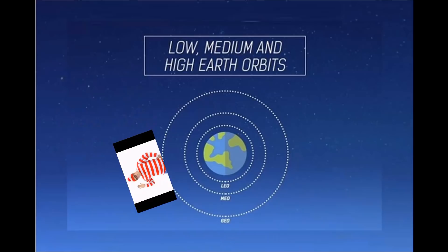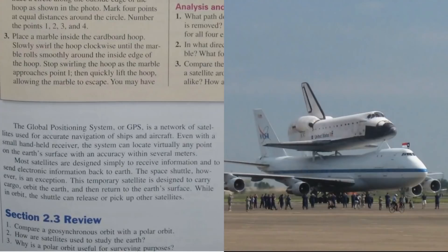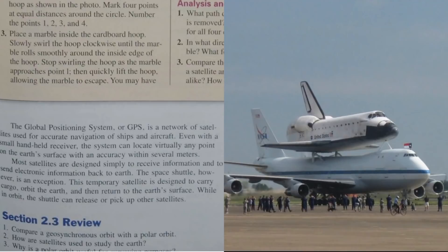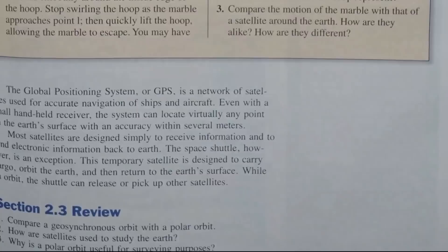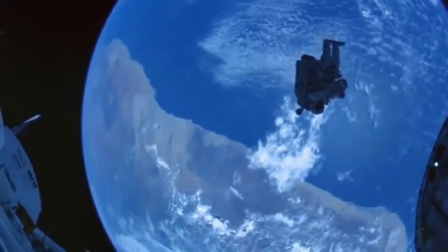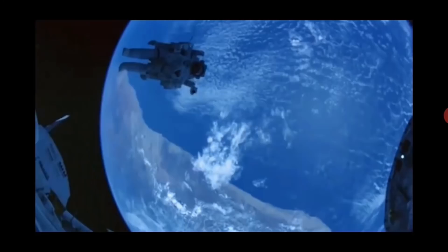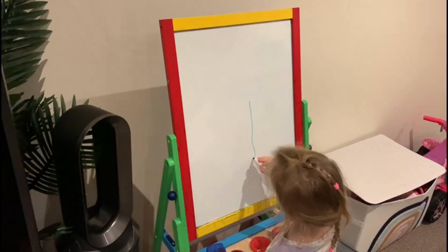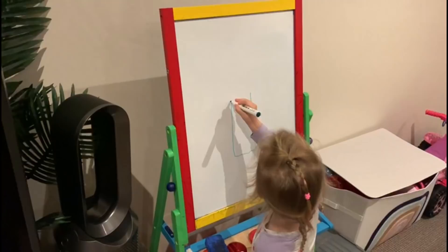The space shuttle, however, is an exception. This temporary satellite is designed to carry cargo, orbit the Earth, and then return to the Earth's surface. While in orbit, the shuttle can release or pick up other satellites. Well, that finishes all of chapter 2. It seems they don't have any comments about the space shuttle. Well, it's a pity — I was hoping to get to say Namibia. Can you say Namibia? It's fun to say Namibia. Well, there you have it boys and girls. And as a special treat for all of you who persevered and made it right to the end, I'm going to let the cute little Professor Emma explain some rocket science to us. Take it away, Emma.